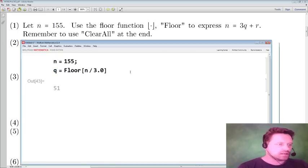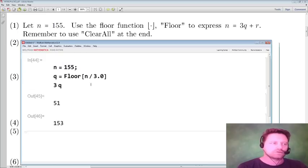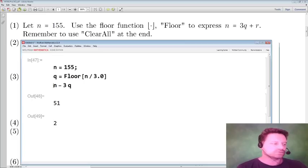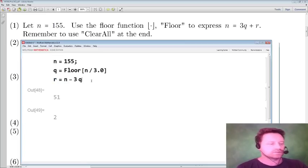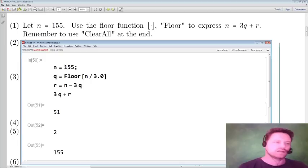Okay, so next I want to calculate the remainder. I need 3 times q, I just put a space for that, shift enter: 153, that's quite near 155. So to get the remainder I just subtract that from n and I have a remainder of 2. So r equals 2 and let's just check that 3q plus r is 155. Yes, that's good.